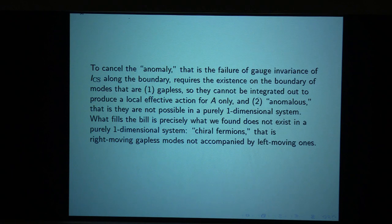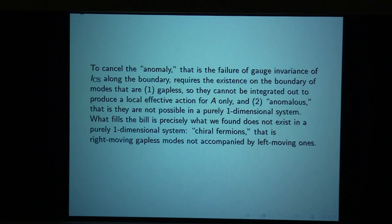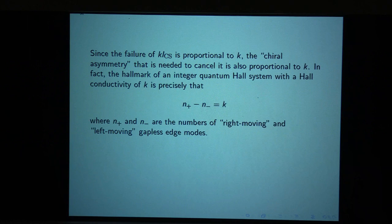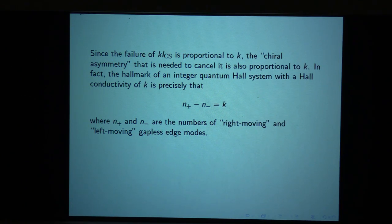Relativistic physicists know that chiral fermions in one dimension are anomalous, meaning their effective action is not gauge invariant. So because it's not gauge invariant, it can't exist by itself in a purely one-dimensional system. But on the boundary of a quantum Hall system, where the bulk action has a problem with gauge invariance along the boundary, the problem with the chiral fermions can cancel the problem from the Chern-Simons system. Since the failure of k times the Chern-Simons action to be gauge invariant is proportional to k, the chiral asymmetry needed is also proportional to k. The hallmark of an integer quantum Hall system with Hall conductivity k is that n-plus minus n-minus equals k.